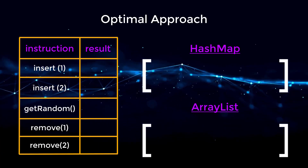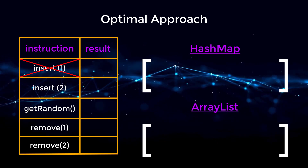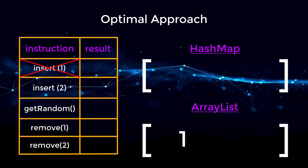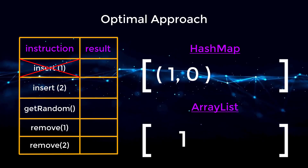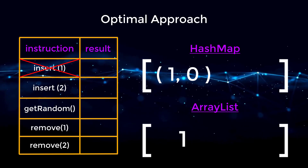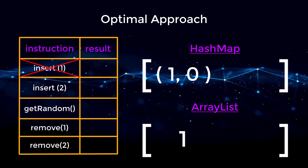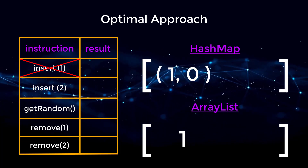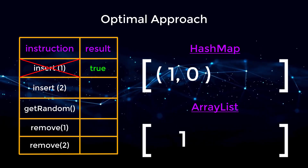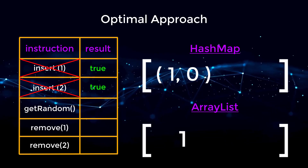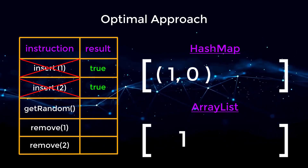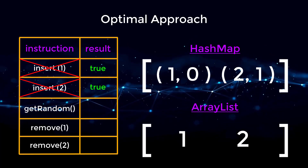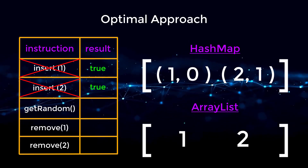Now let's execute the following instructions. First, we insert one. Our list and map are completely empty, so the value one gets appended to our list, and the map stores a new entry with one as the key and zero as the value, representing its index. For the second instruction, insert two, this returns true because two is not already in our map. The value two gets appended to the list, and the map stores two as the key with index one as the value.